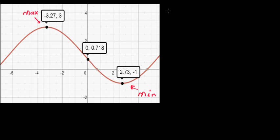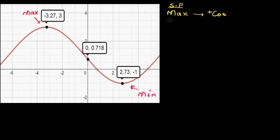SP stands for starting point — this is good to remember. If the starting point is the maximum, it's a positive cosine graph. In any trig graph you will generally be given the maximum or minimum, so it's better to write it as a cosine graph. If your starting point is the minimum, it is a negative cosine graph — minus cos.